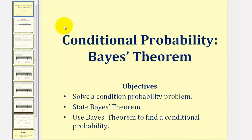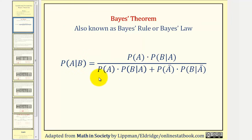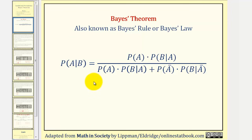Welcome to a lesson on Bayes' Theorem. Bayes' Theorem, also known as Bayes' Rule or Bayes' Law, is given here for the probability of A given B. Before we apply Bayes' Theorem, let's look at an example of conditional probability and solve it intuitively, and then see if we get the same results using Bayes' Theorem.